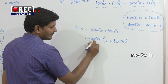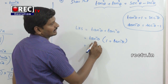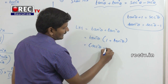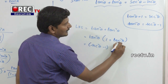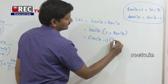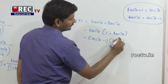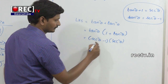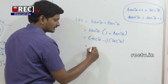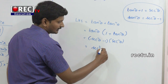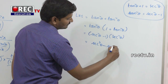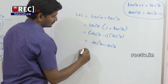tan²θ is replaced by (sec²θ - 1), and (1 + tan²θ) is equal to sec²θ. So we get (sec²θ - 1) × sec²θ. Multiplying out: sec⁴θ - sec²θ, which equals RHS.